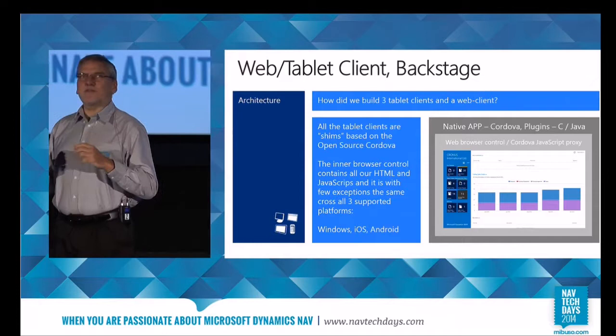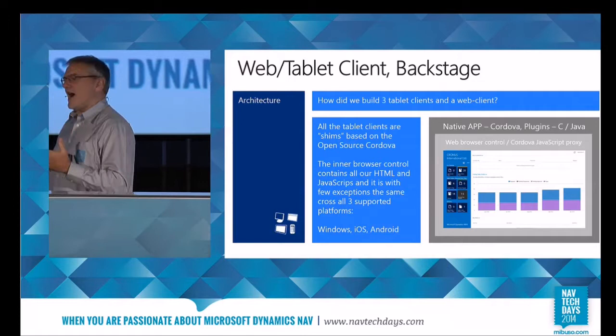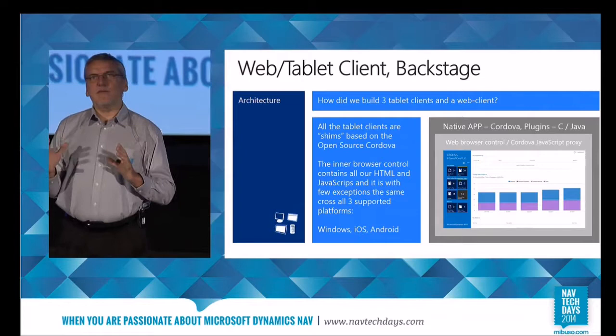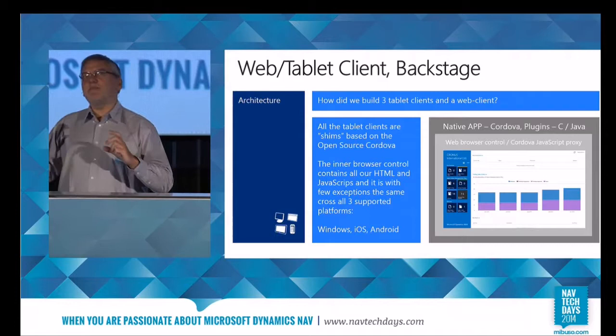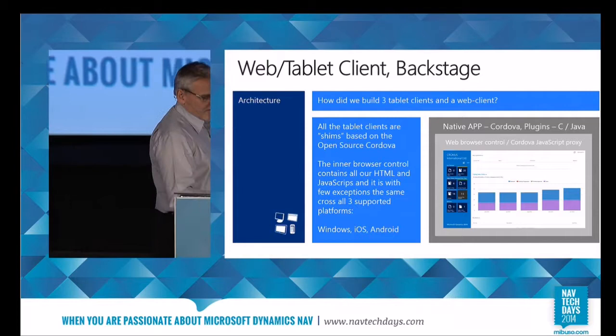The three tablet clients — I call them three because it appears to be three — are basically only one. We use an open-source framework called Cordova. These guys built a native app which runs on iOS, Windows, and Android. Inside that, they host a web control, and inside the web control there are some APIs that eventually end up being HTML5 and JavaScript. So what we built is only one — though it's quite difficult — an HTML5 JavaScript client that runs inside these shims, which are three different shims built by the Cordova framework. We end up with basically a single client running across three platforms.